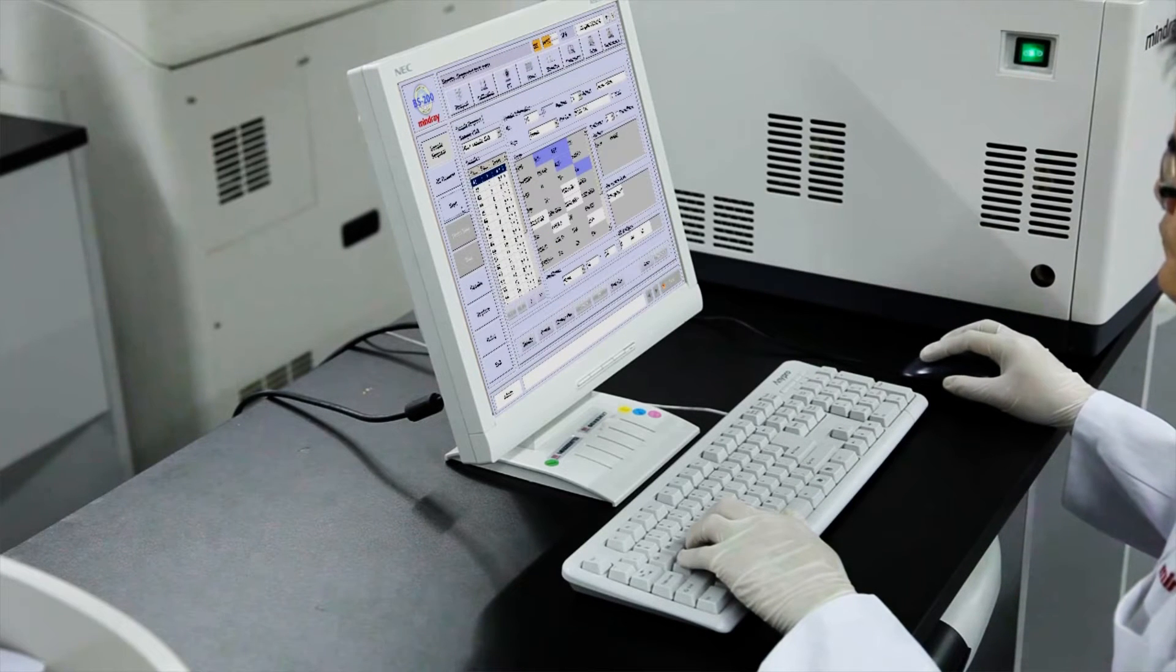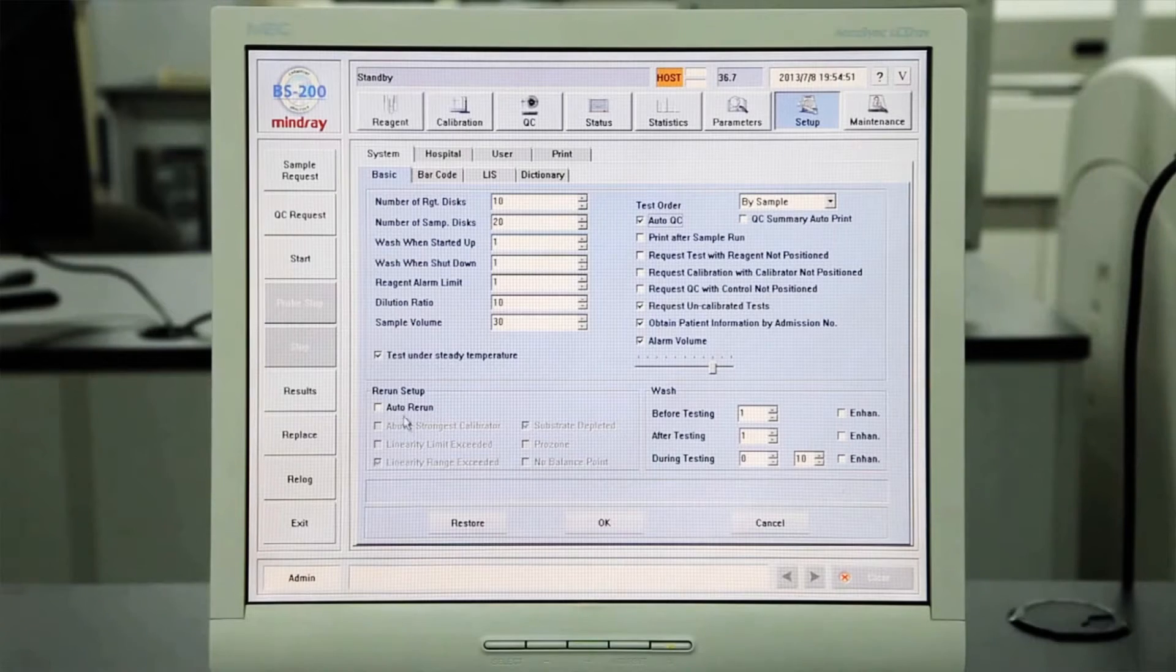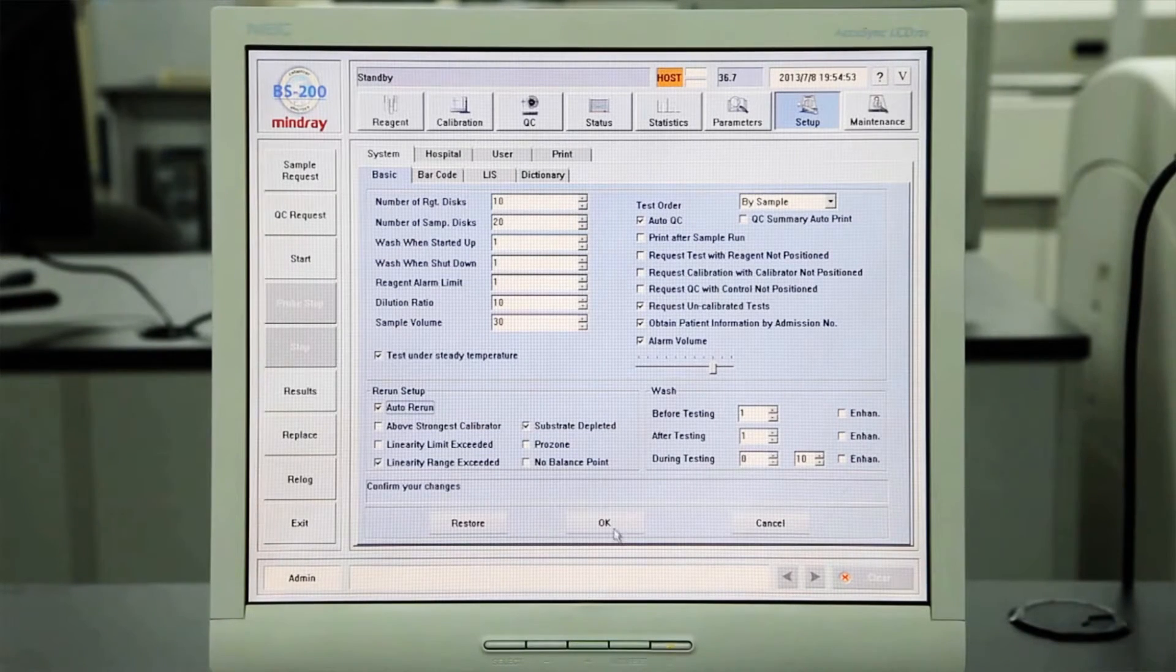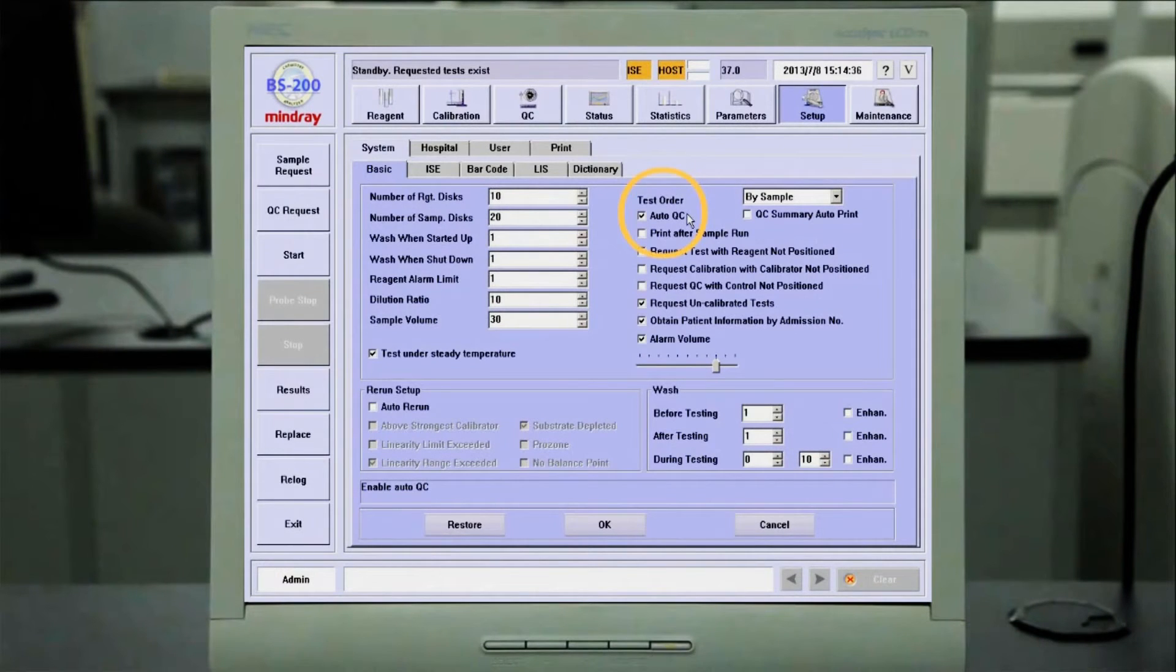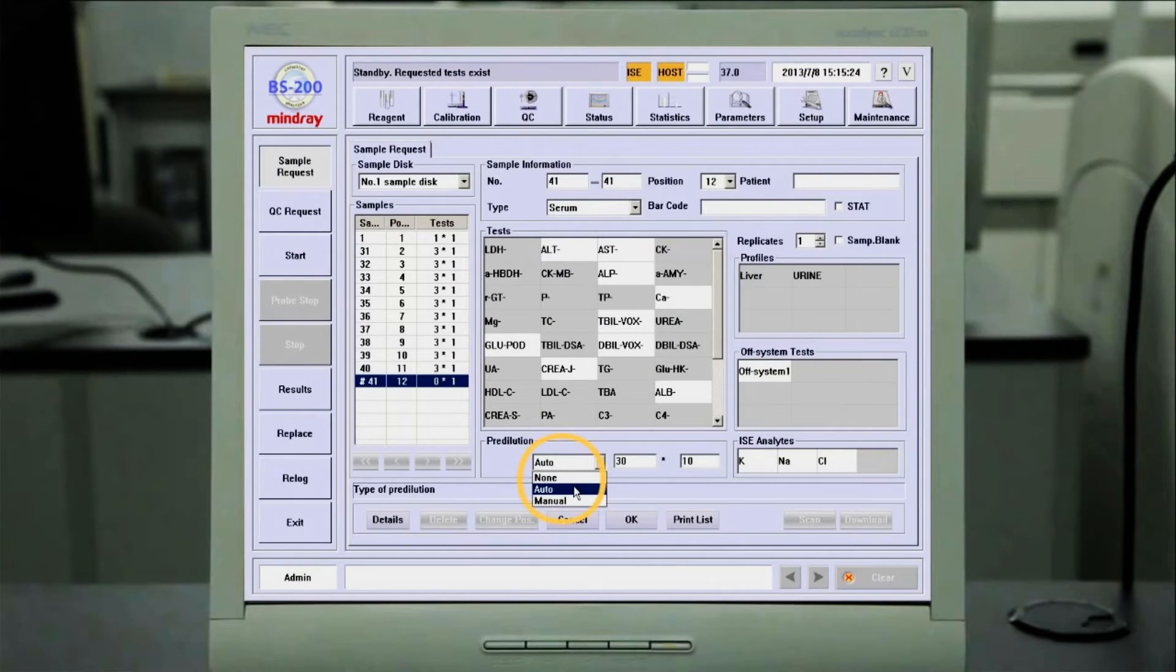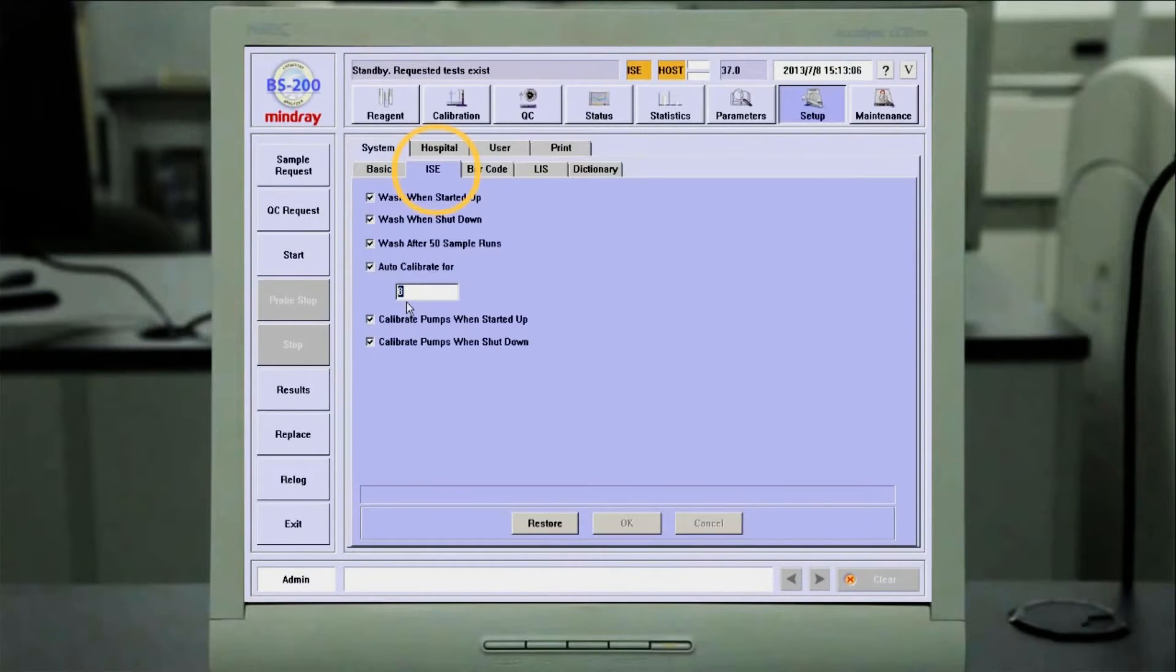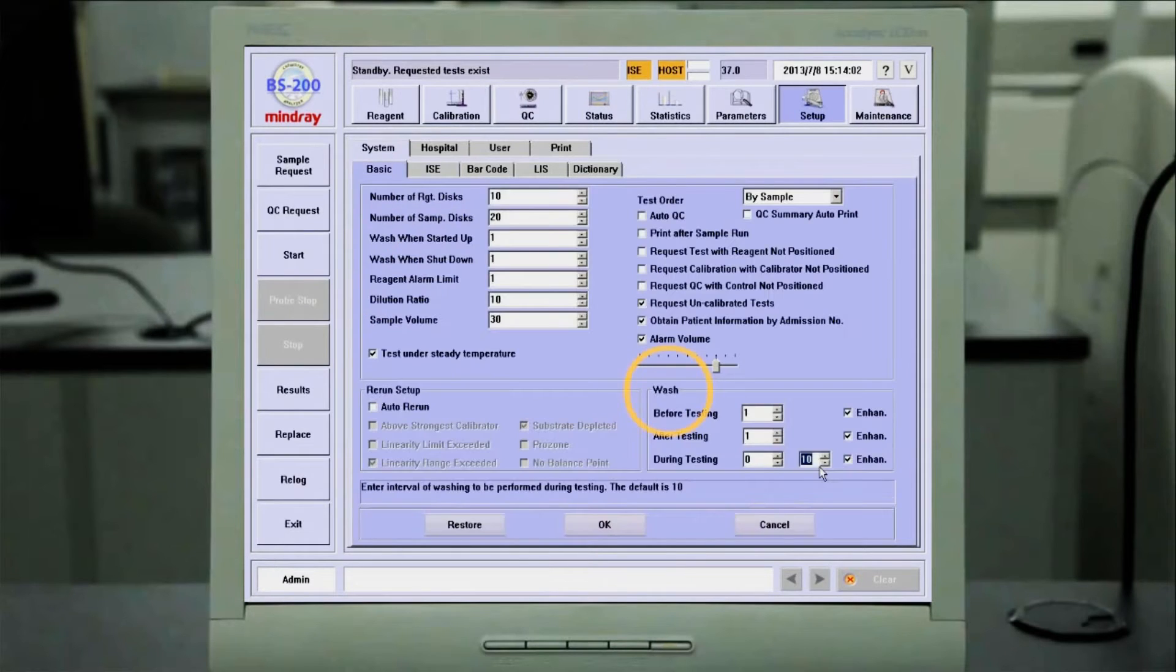the BS200 analyzer offers many high-quality functions typically found on high-volume central lab instruments. These functions are Auto-QC, Auto-Rerun, Auto-Pre-dilution, Auto-ISE Calibration, and Auto-Probe Cleaning.